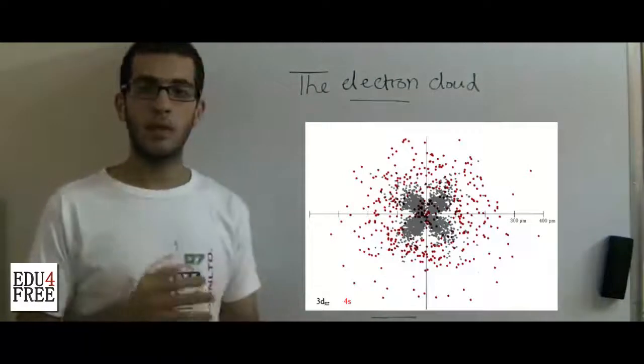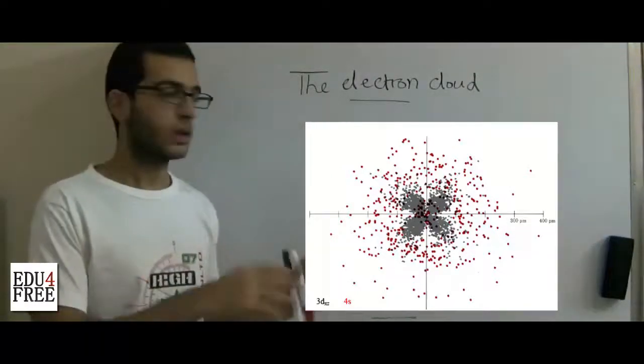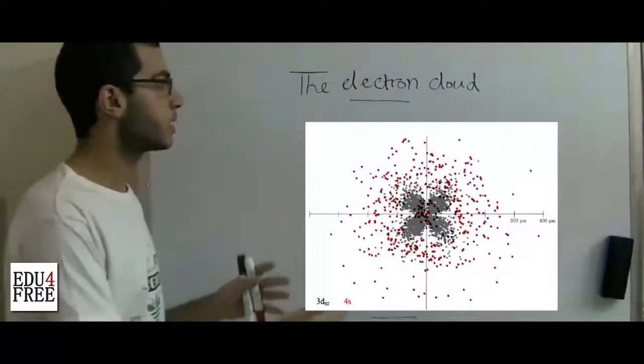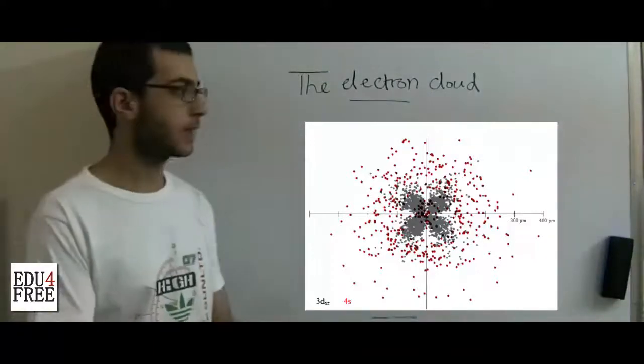This is formed because in one image, the electron is found somewhere. In the other image, it's found somewhere else. At the third image, it's found at the third place and so on.